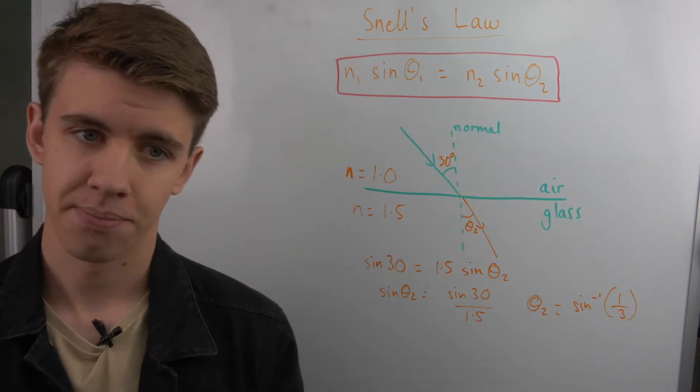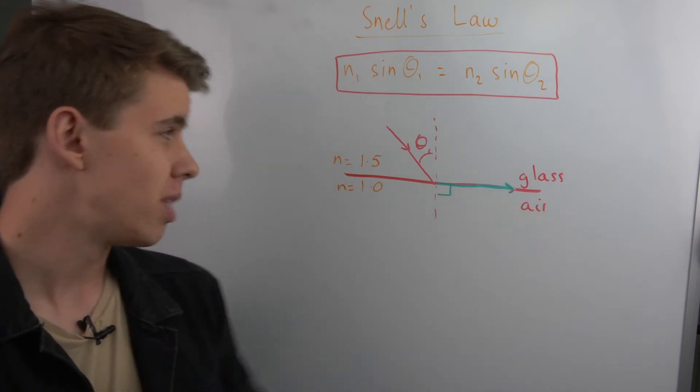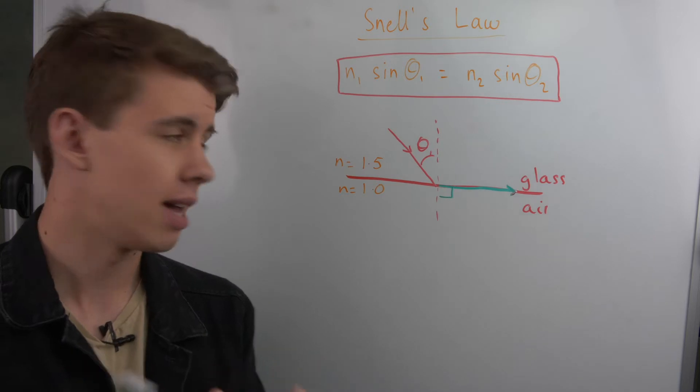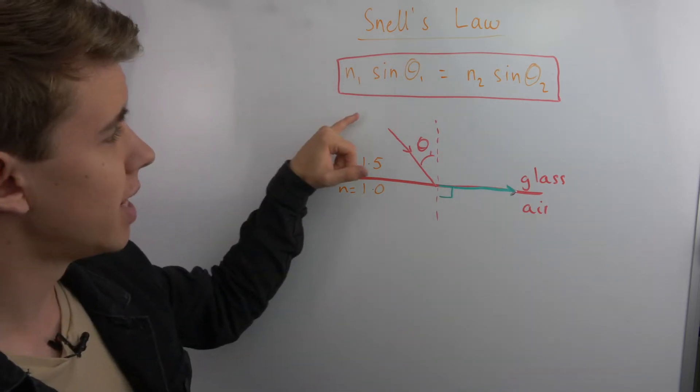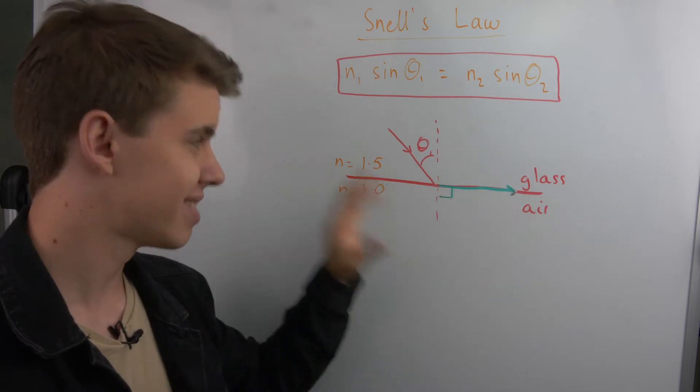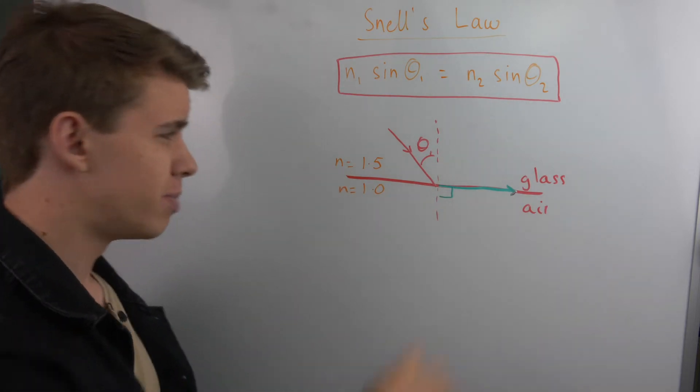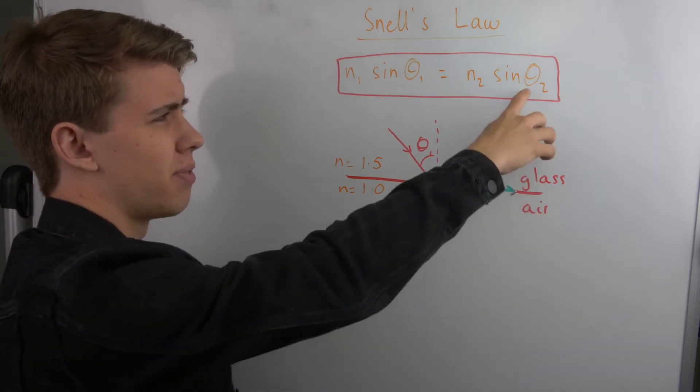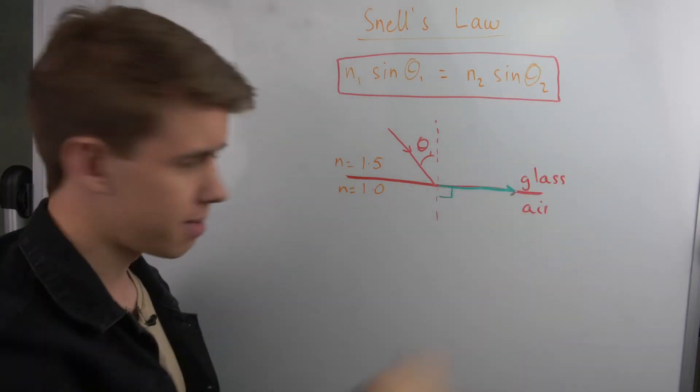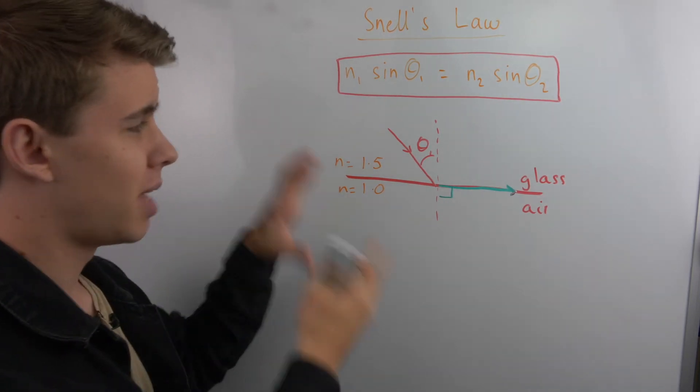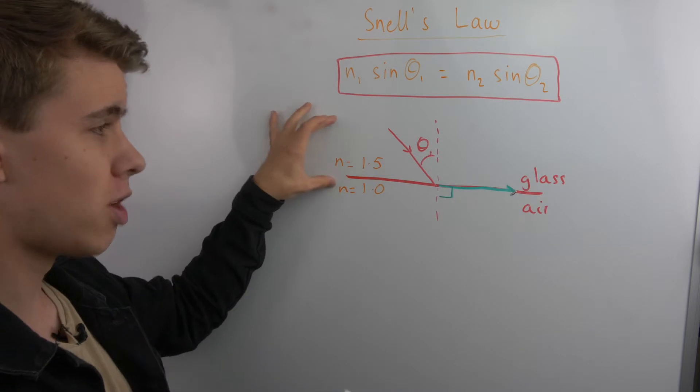When you get to higher level things like the critical angle or total internal reflection, we can use the same equation to explain what's going on there. So looking at our critical angle, critical angle is a very specific angle which when we have an incident ray hitting this border, the light refracts and then travels along the border. Which means our angle of refraction is actually 90 degrees here, so our sine of theta 2 will be sine of 90.